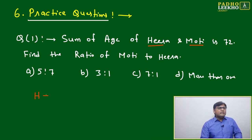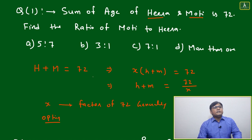The sum of ages of Hira and Moti equals 72. We can write this in a different format: let X be the common factor, then X(h + m) = 72, where h and m represent the ratio components.